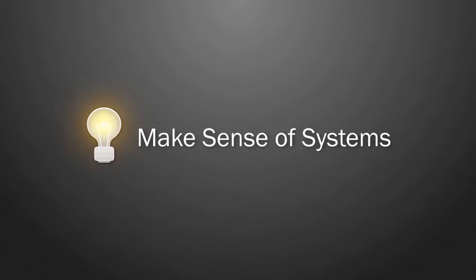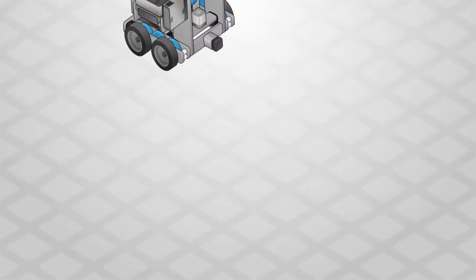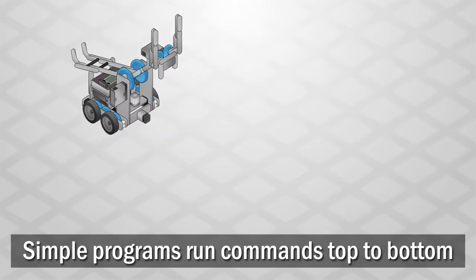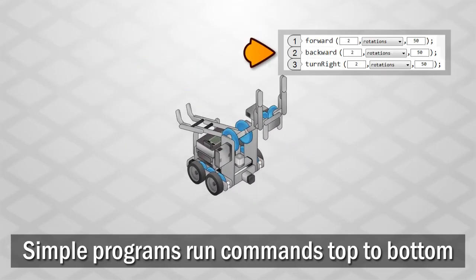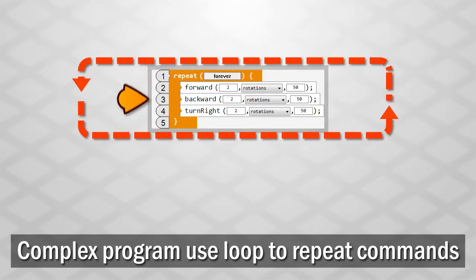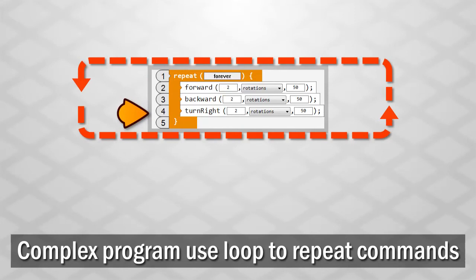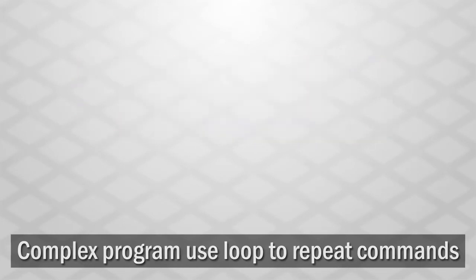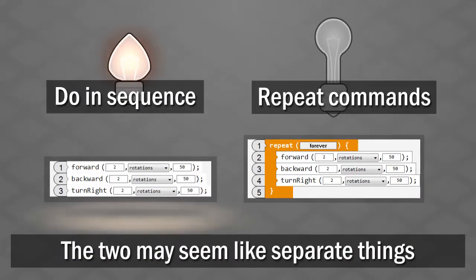Idea number three: make sense of systems. Simple programs have a simple rule: run commands in order from top to bottom. More complex ones might contain loops that repeat the commands inside them. At first, doing things in order and repeating them sound like two different things.